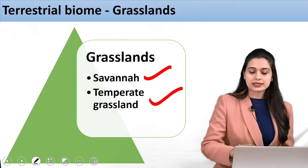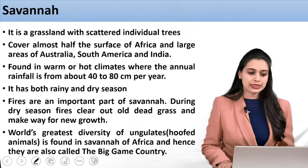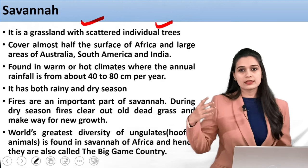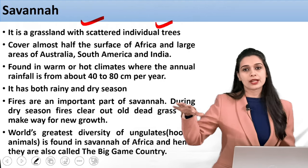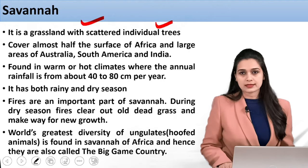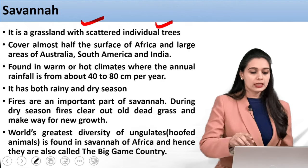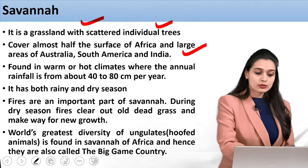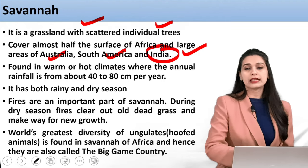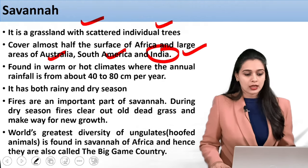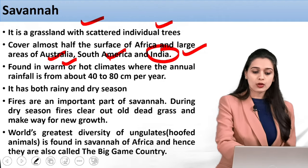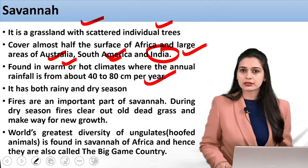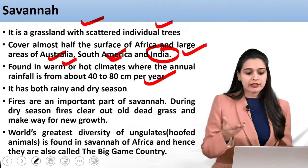Starting with savannas — savannas are grasslands with scattered individual trees. You will see large free spaces covered with grasses and individual trees placed at various distances. This covers half the surface of Africa. You will also find savannas in Australia, South America, and India. They are found in warm or hot climates where the annual rainfall is from 40 to 80 cm per year — a medium level of rainfall — which is why there are not many trees.